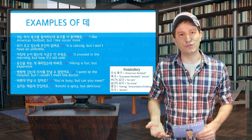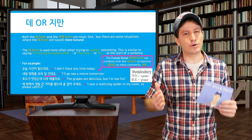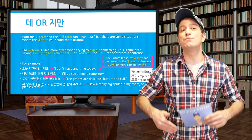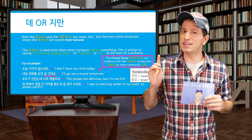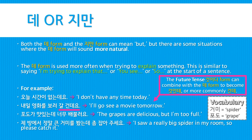Now let's compare the 데 form with 지만, which also means 'but.' There are situations where the 데 form sounds much more natural. The first is when you're trying to explain something — similar to saying 'I'm trying to explain that,' 'you see,' or 'so' at the start of a sentence. For example, 오늘 시간이 없는데요 — I don't have any time today. You see, I don't have any time today. Or, so, I don't have any time today.